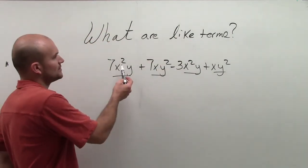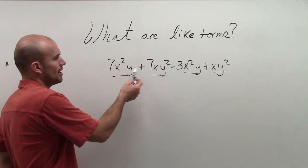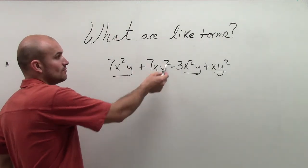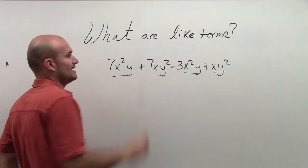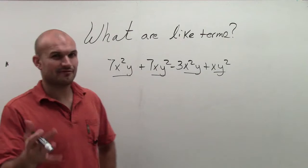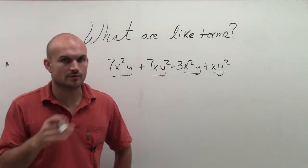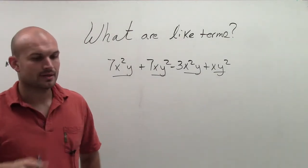So my variables are x squared y, x, y squared, x squared y, and x, y squared. Different variables, and some of them are the same.